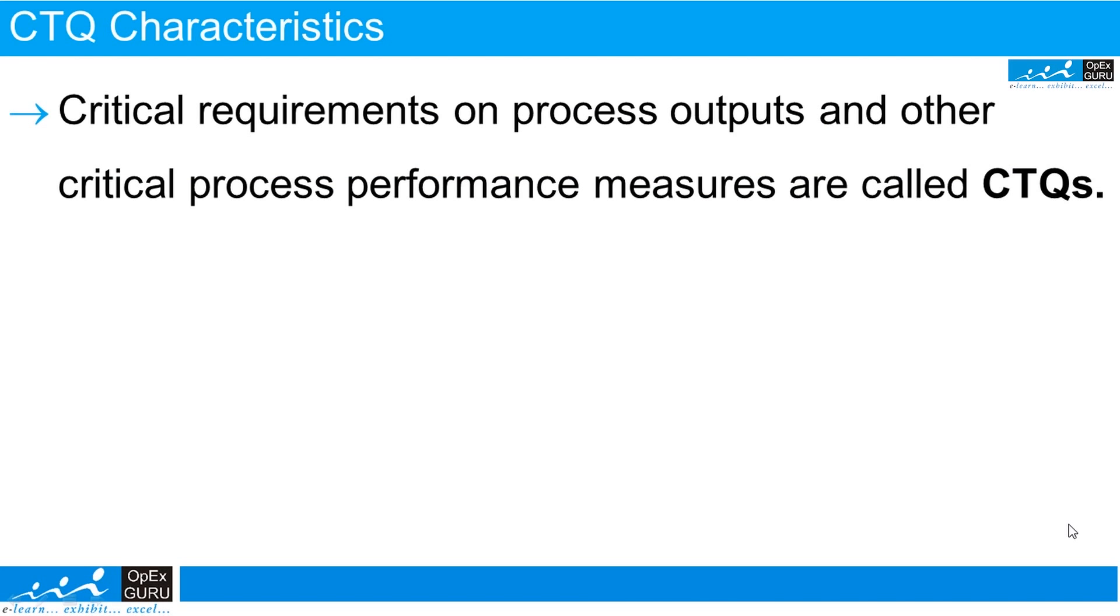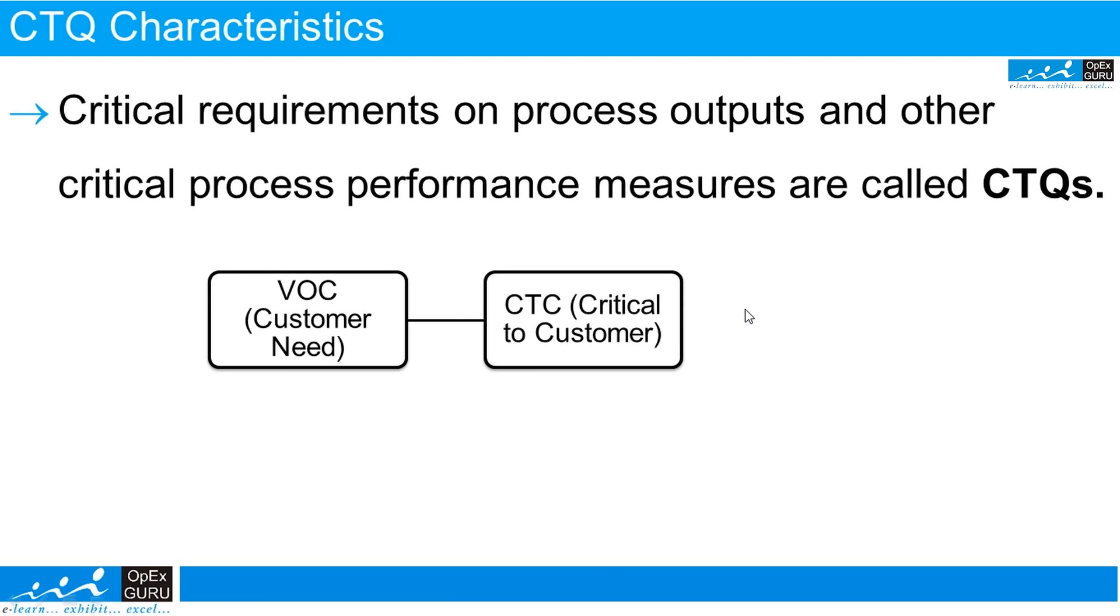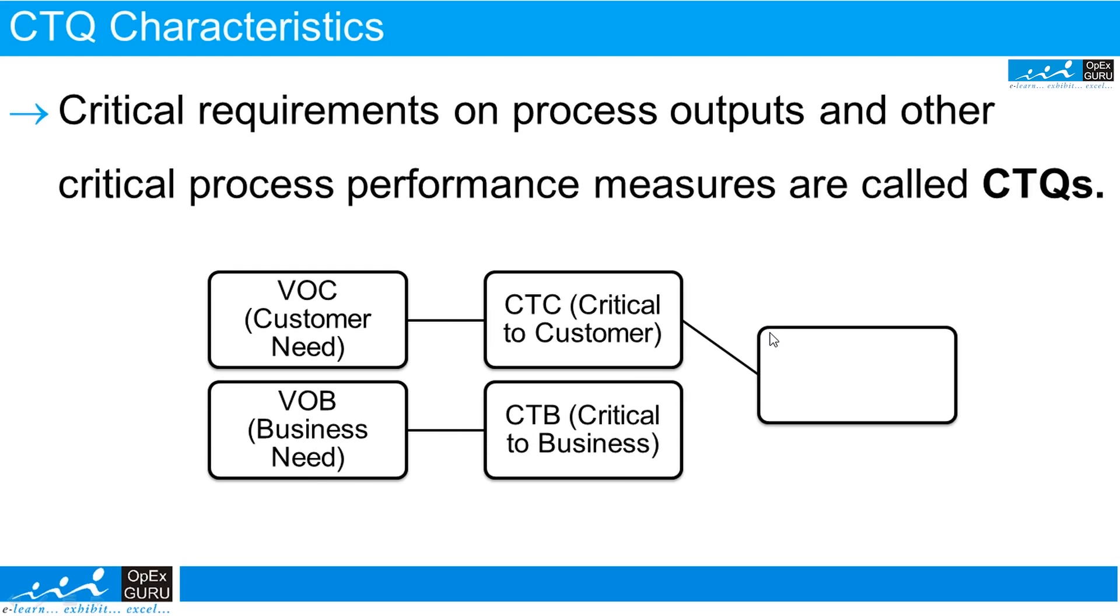Let us understand more about CTQ, critical to quality. There are two kinds of terminologies we use in Six Sigma. One is VOC, voice of customer, which relates to CTC, critical to customer. Whenever it's related to voice of business, we say CTB, critical to business. But for common understanding, we say CTC.